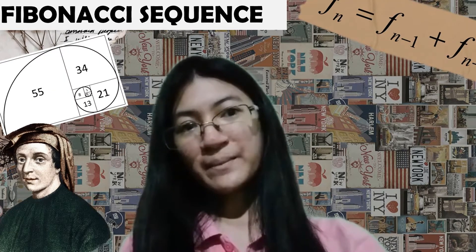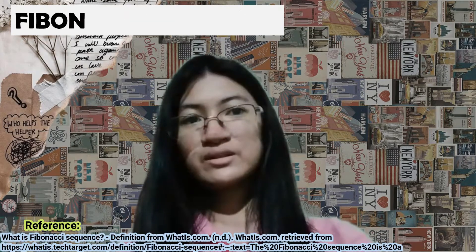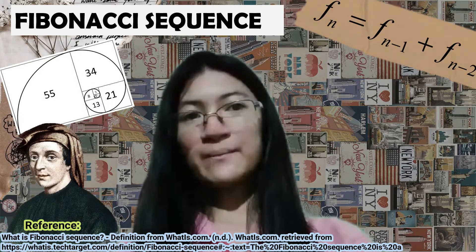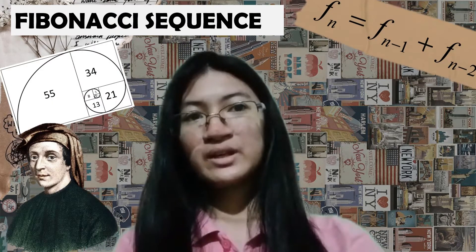Hi! My name is Rochelle Archesi Mendoza, and today we're going to talk about the Fibonacci Sequence. The Fibonacci Sequence is one of the most famous formulas in mathematics. It is a set of numbers that starts with 0 or 1, followed by 1, and proceeds such that each number — called a Fibonacci number — is equal to the sum of the preceding two numbers.